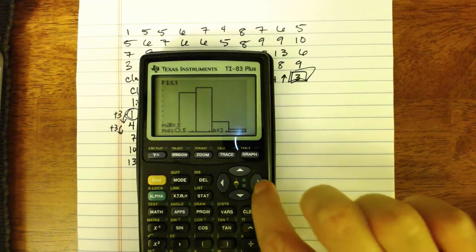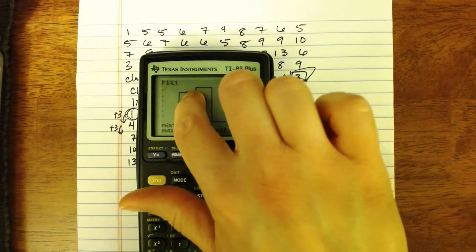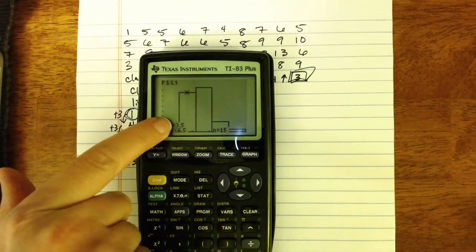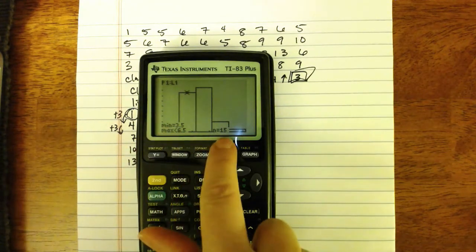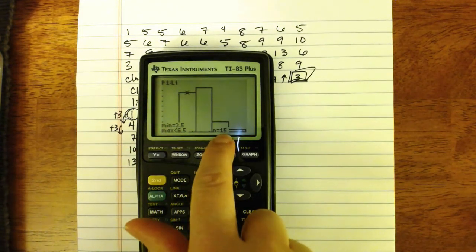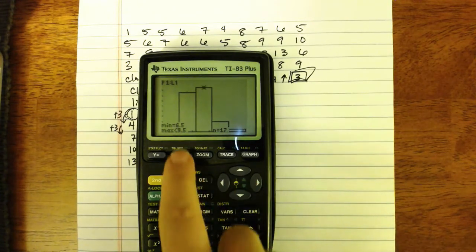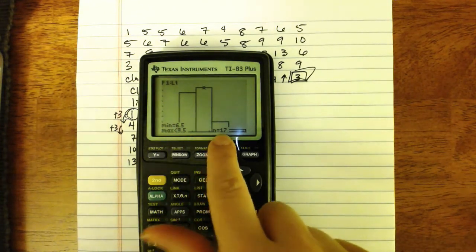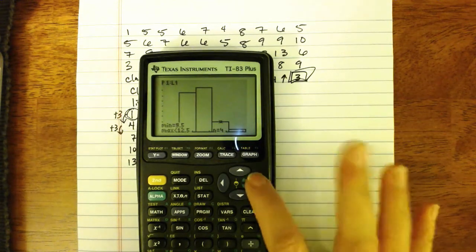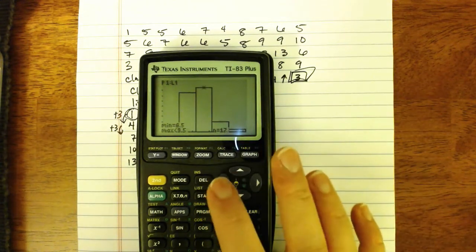If you press your right arrow key, it will bring the blinking cursor to the top of the next bar. That bar represents the category from 3.5 to 6.5. And we had 15 pieces of data in there. In the next category, that's 6.5 to 9.5. We had 17 pieces of data and so on and so forth. I can look at each different class.